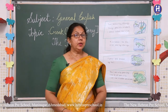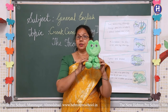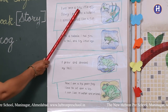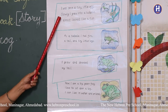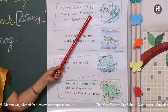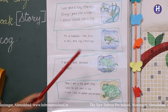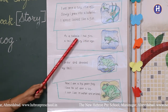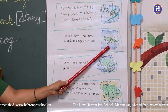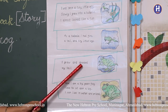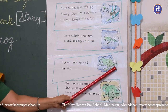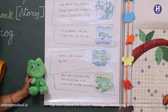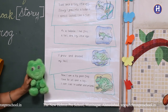Now we will learn the life cycle of a frog in the form of a story. I was once a tiny little egg. Slowly I grew into a tadpole. I almost looked like a fish. As a tadpole, I had fins, a tail, and tiny little legs. I grew and dropped my tail. Now I am a big green frog. I love to sit upon a log. I can live in water and on land.